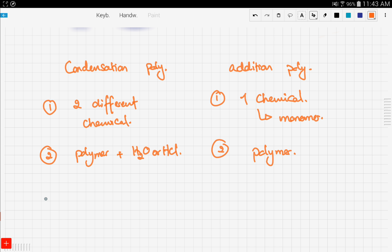One thing to note is that in condensation polymerization, the two chemicals have two functional groups, and those two functional groups are the ones responsible for the whole process. So here, let's write functional, two functional groups are responsible for the reaction.